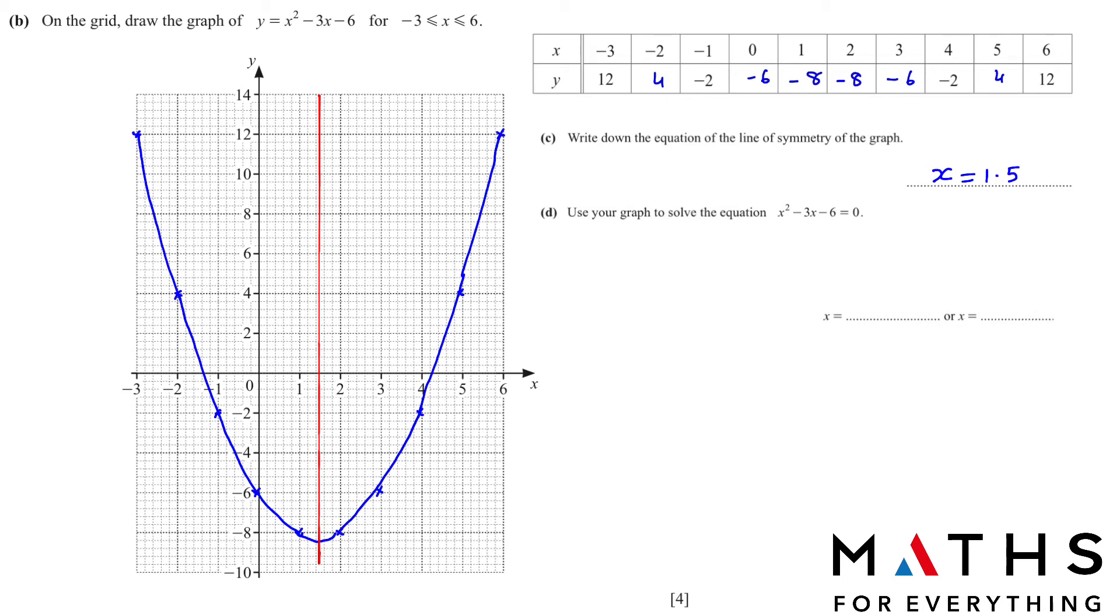Part (d): Use your graph to solve the equation x² - 3x - 6 = 0. When we have equal to 0, we have to look at the X axis and see where it cuts the X axis, for which value of x. So here we have -1.4. X = -1.4 because each line is representing 0.2. And this is 4.2. Your answer can be anything between -1.4 to 4.4 and that will be okay. You just needed to realize that each point here represents 0.2.